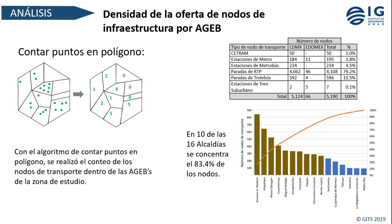Empleamos diferentes algoritmos de análisis espacial para evaluar la conectividad de la red de transporte público. El primero es 'contar puntos en polígono': teniendo la capa de AGEBs y la capa de nodos de transporte —hicimos un merge de todas las capas de diferentes sistemas en una sola—, el algoritmo nos da para cada AGEB el número de nodos que existen. Por ejemplo, aquí tenemos seis, aquí cero, aquí dos, aquí uno. Este primer resultado nos dice cuántos nodos por AGEB hay, es decir, cuántos lugares donde uno puede conectarse con el sistema de transporte.